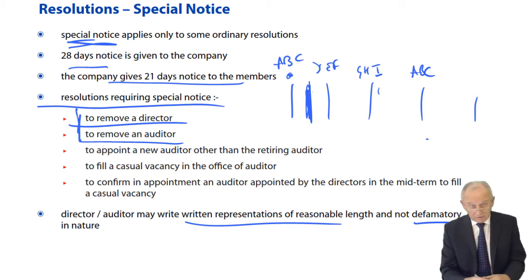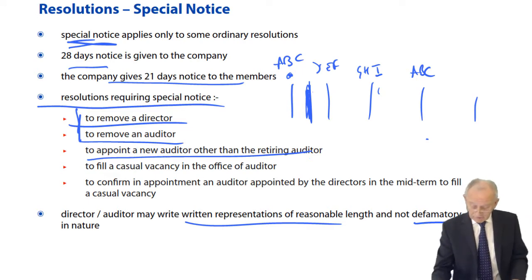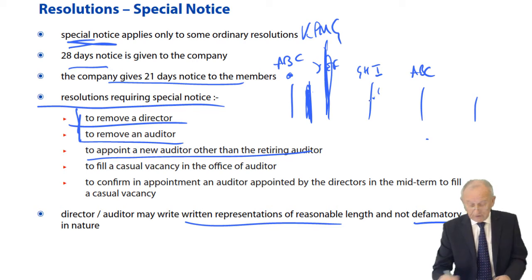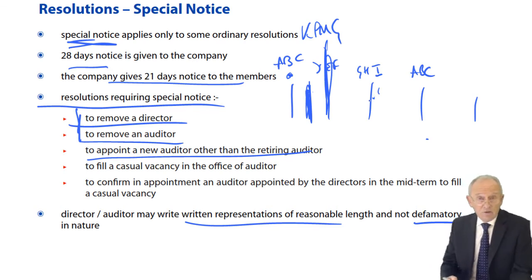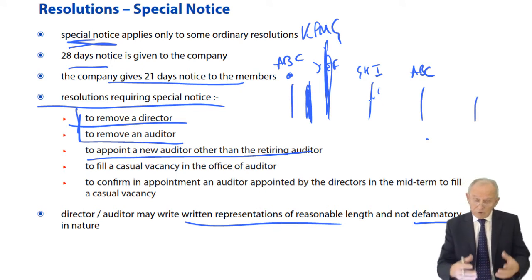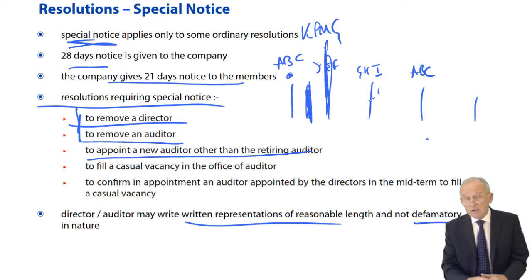Those are the two easy ones to remember: remove a director, remove an auditor. The other three — the remaining three of the five altogether — are all to do with auditors. The third is to appoint as auditor someone other than the retiring auditor. For example, KPMG retire at the end of the annual general meeting and normally would hold office until the end of the next, but they choose not to — they say it's time for a change after seven years.